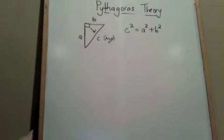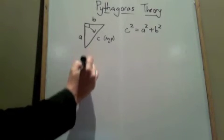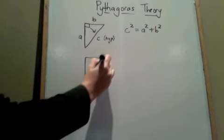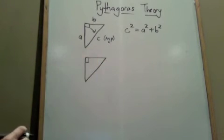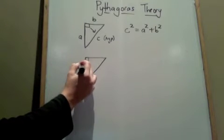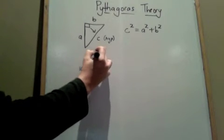This theory can be used to find the length of unknown sides. Let's take an example. If we have a right angled triangle that has one side to be 10, the other side to be 5,